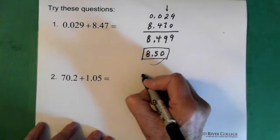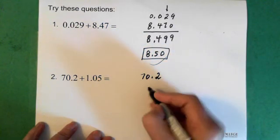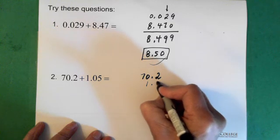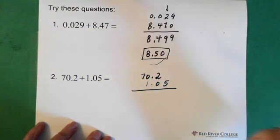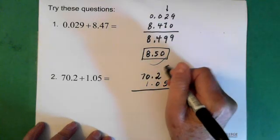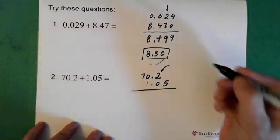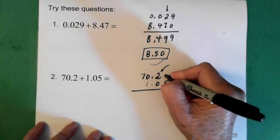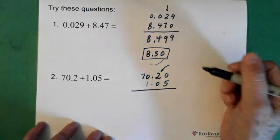Now we'll add these numbers. 70.2 and 1.05. And we can see again that the least precise number is here. So this is in the tenth position so our answer will have to be in the tenth position as well. And if it helps we put a 0 up here in this place just to remind ourselves that there is a 0 there.